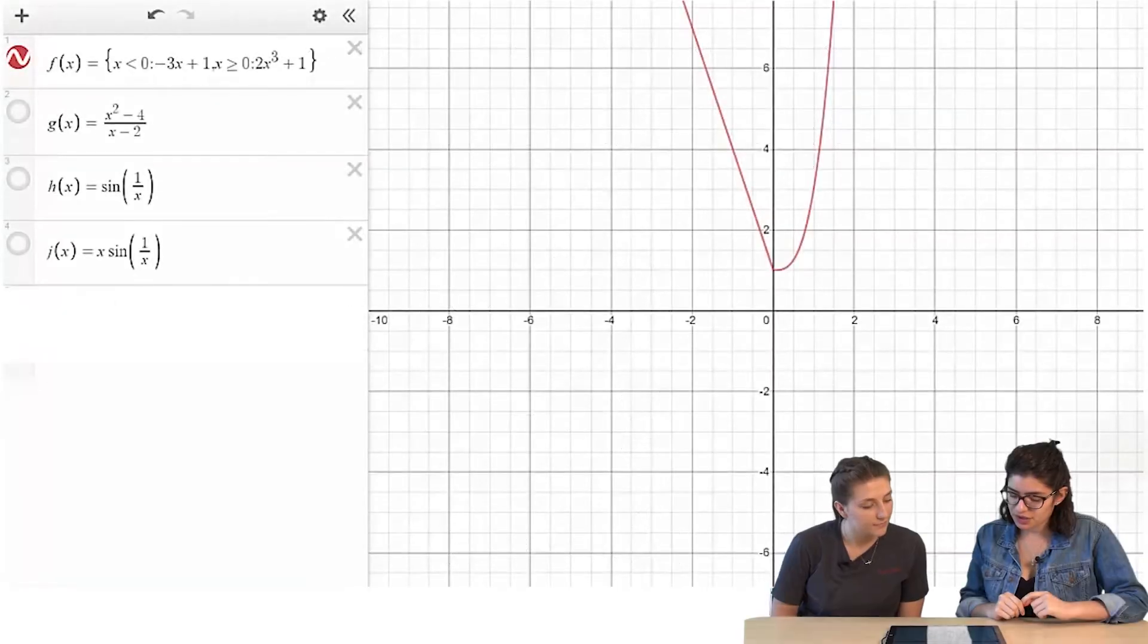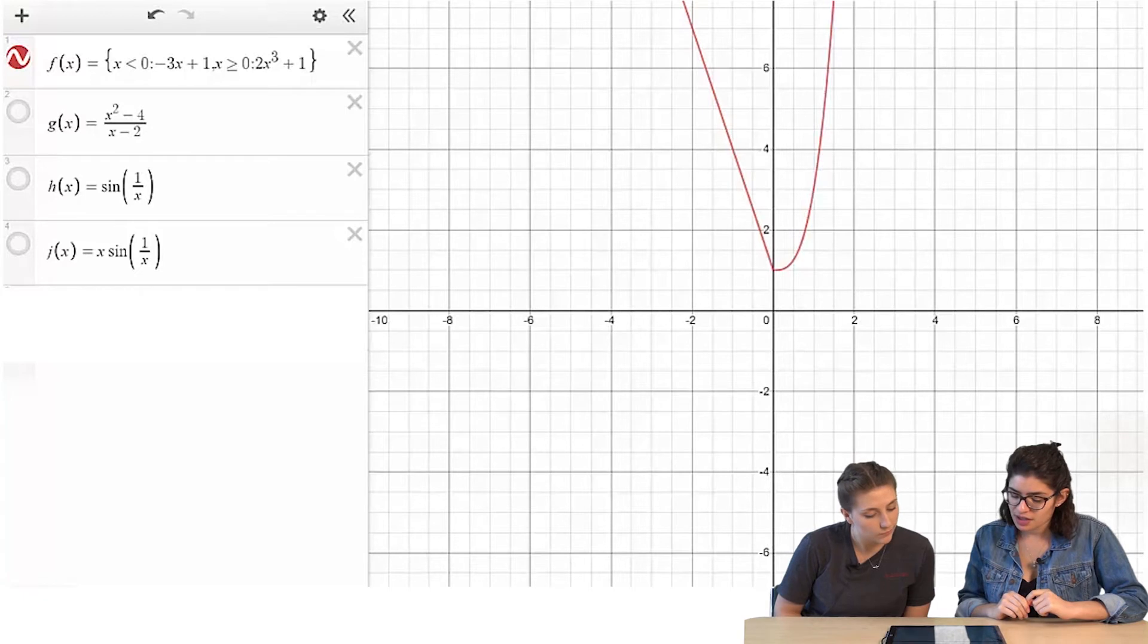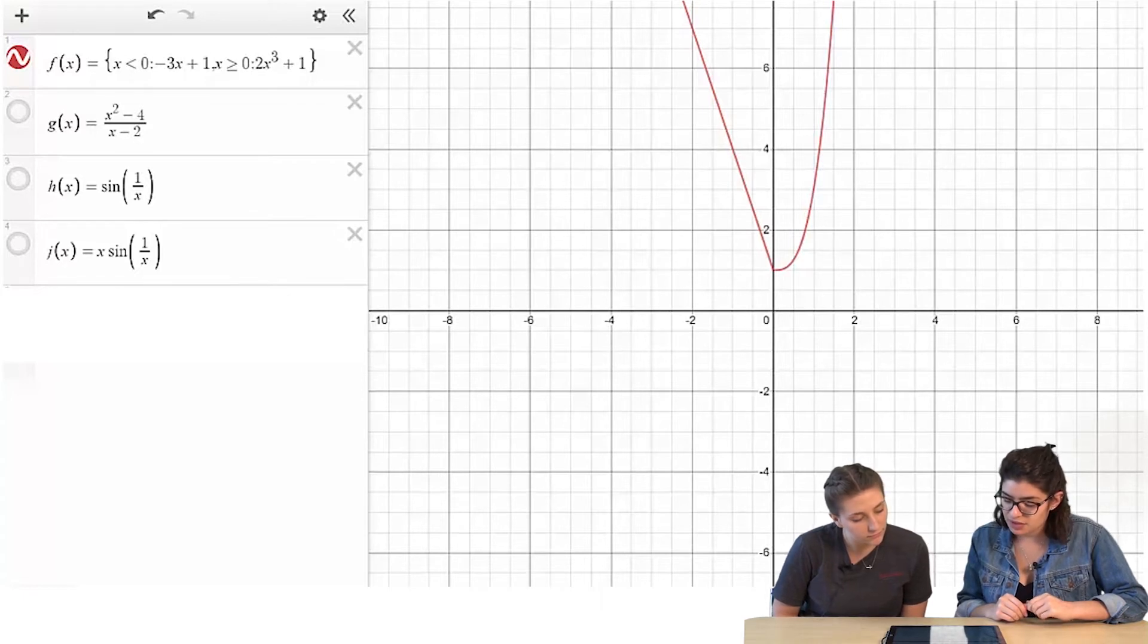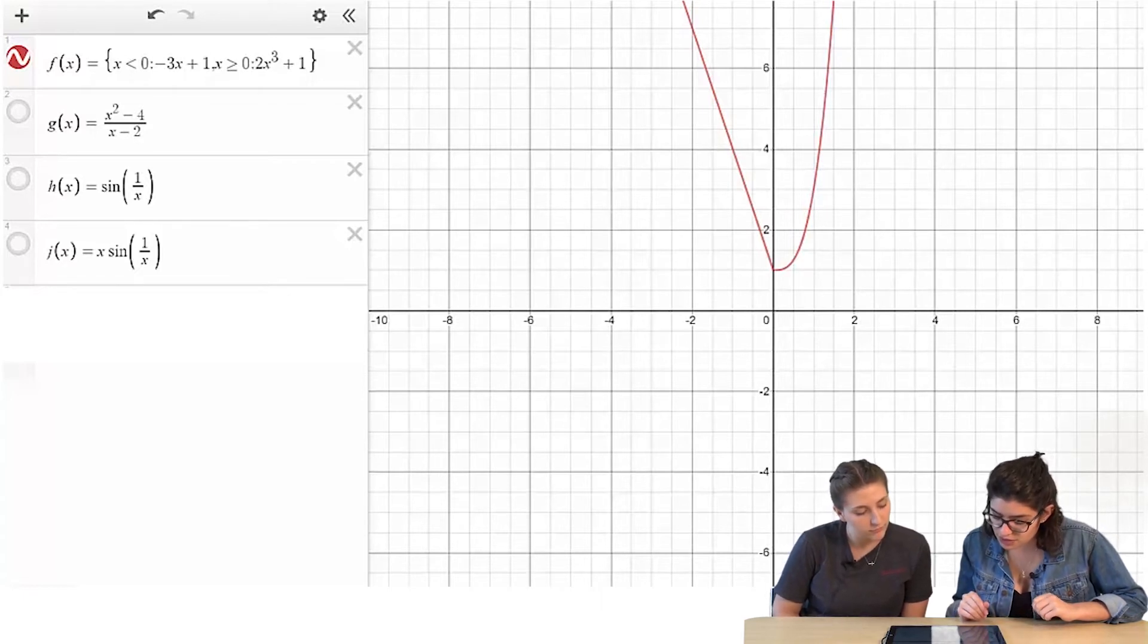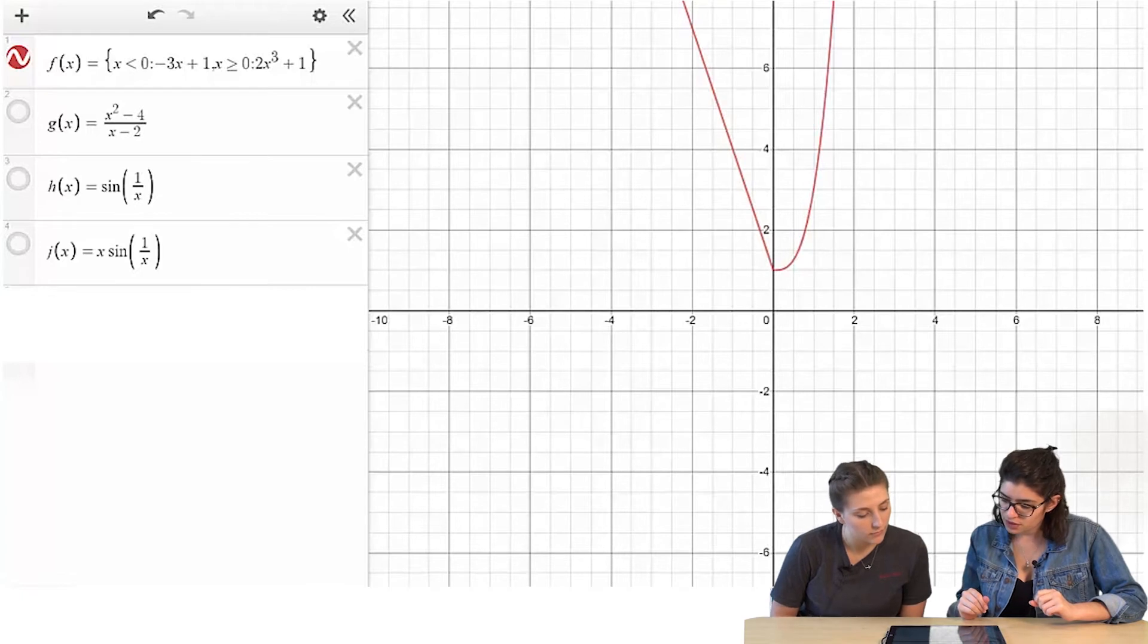So we're looking at the function, or piecewise function. For x is less than 0, we have the function negative 3x plus 1, and when x is greater than or equal to 0, we have 2x cubed plus 1. So, do you think that it's continuous?